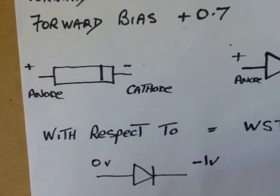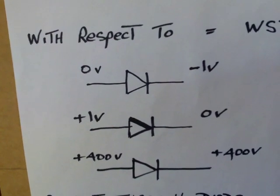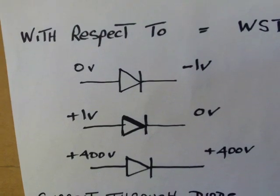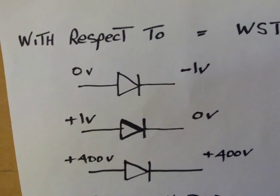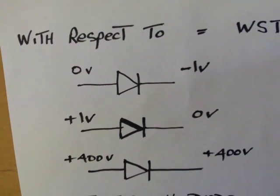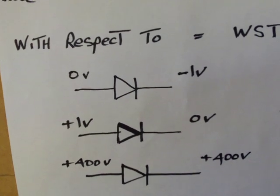Remembering with respect to the WST, the anode has to be positive with respect to its cathode. In the first example, we have 0V on the anode, minus 1V on the cathode. That is forward biased. There is 0.7V potential difference between the anode and cathode, so it will conduct.